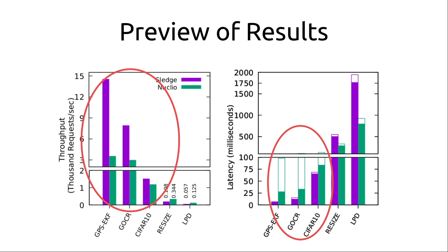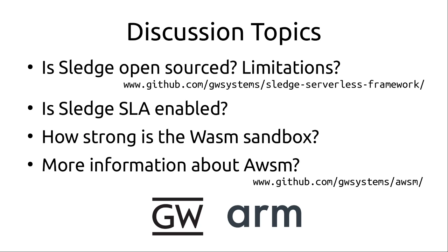We see that tasks that are very fast would be a good fit for the edge. If it's a very long task on the order of half a second to a second, it might as well be run in the cloud. For those very fast tasks, Sledge ends up having a significant performance improvement over Nucleo — at almost 15,000 requests per second versus Nucleo's approximately 3,000 — and there's a comparable latency decrease for Sledge as well. We view this as a successful indication that Sledge is an interesting way to think about providing serverless for high-density systems at the edge.